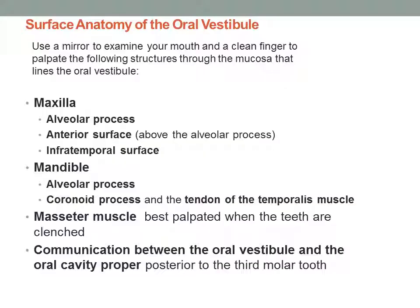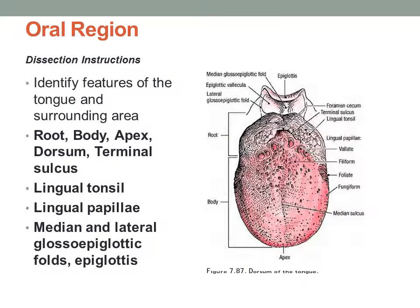Here for your review are some structures of the surface anatomy of the oral vestibule. For the dissection of the oral region, first identify some of the features of the tongue. The tongue has a root, a body, and an apex. The midline is the median sulcus, and then you have several types of papillae: the vallate, filiform, foliate, and fungiform.